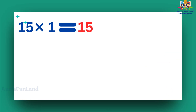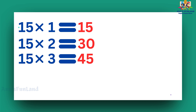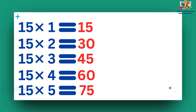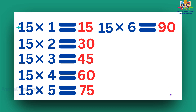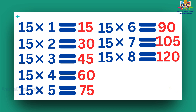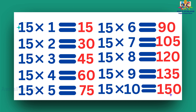15 ones are 15. 15 twos are 30. 15 threes are 45. 15 fours are 60. 15 fives are 75. 15 sixes are 90. 15 sevens are 105. 15 eights are 120. 15 nines are 135. 15 tens are 150.